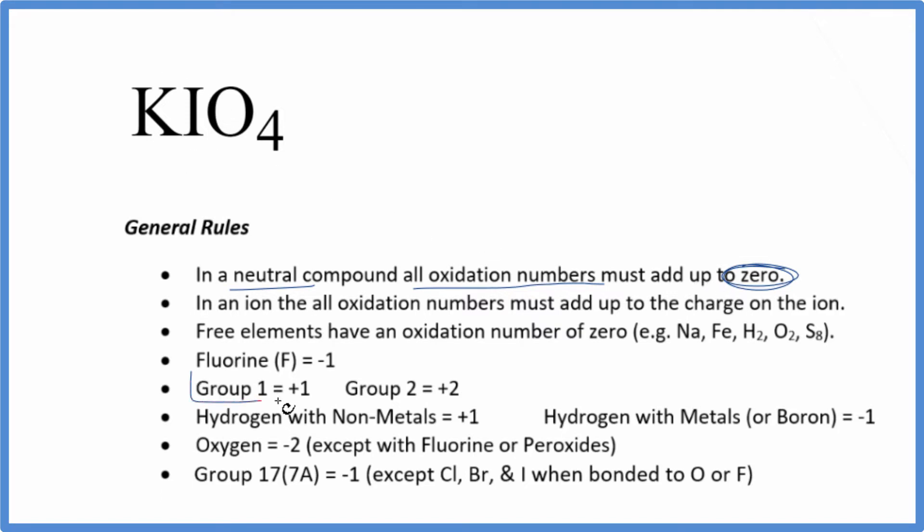Potassium, that's in group 1 on the periodic table, so it'll have a plus 1. Iodine, we don't know that in this case because it's in group 17, but it's bonded to an oxygen atom, so we're just going to call this x.